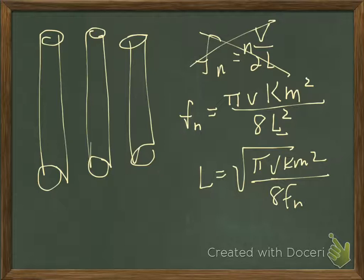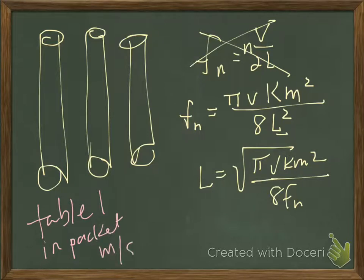And you know what? In table one, I forgot this. Table one in your packet, those speeds are all in meters per second. Those velocities are all in meters per second. And somehow I left that off of there, so that's my fault. So if you're using aluminum, 5,150 meters per second. Brass, copper, steel.